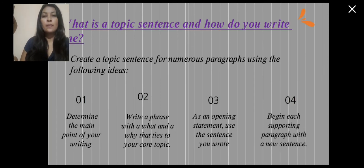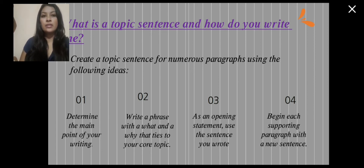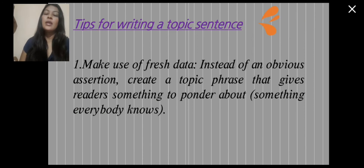What is a topic sentence and how do you write one? Create a topic sentence for numerous paragraphs using the following ideas. Number one: determine the main point of your reading. Number two: write a paragraph with a what and a why that ties to your core topic. Number three: as an open assignment, use the sentence you wrote. And finally, begin each supporting paragraph with a new topic sentence.